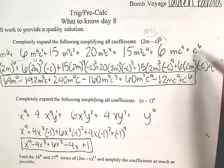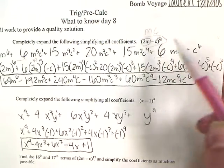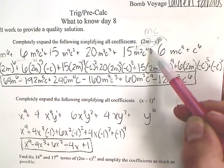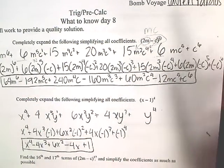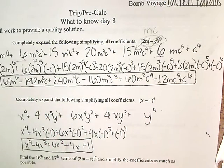6m c to the 5th plus c to the 6th. Now what we're doing is we're going to substitute 2m in for every m and negative c in for every c as we did here. And now we're just going to simplify it all out and multiply everything out.